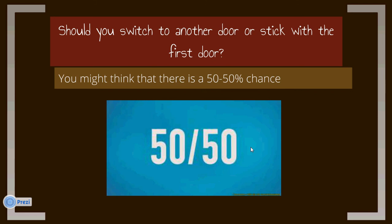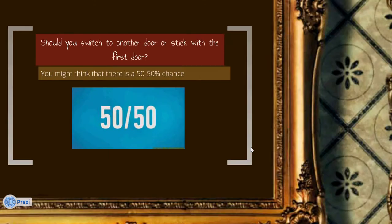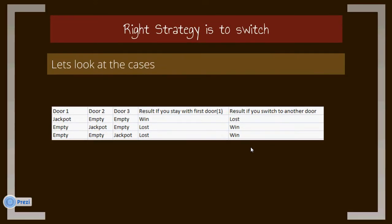You might think that there is a 50-50 percent chance in either case. However, you are wrong. The right strategy is to switch. Let's look at the cases. Suppose you choose door A and the jackpot lies in door A.